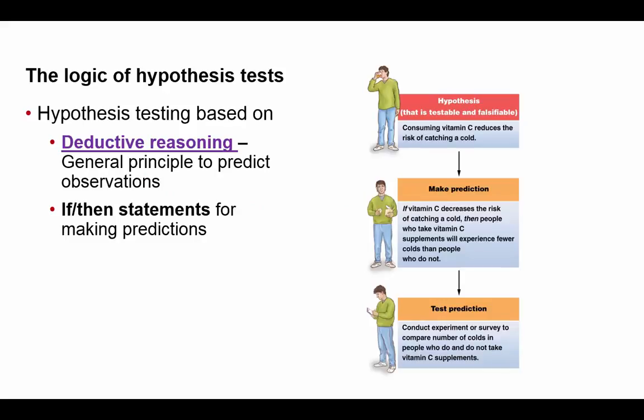There's also something known as deductive reasoning. Where inductive reasoning establishes the hypothesis, deductive reasoning takes your general principle and uses it to predict outcomes through if-then statements. Using our hypothesis — consuming vitamin C reduces the risk of catching a cold — we predict: if vitamin C reduces cold risk, then people who take vitamin C supplements would receive fewer colds than those who don't. We then test that by comparing cold frequency between those who take supplements and those who do not.